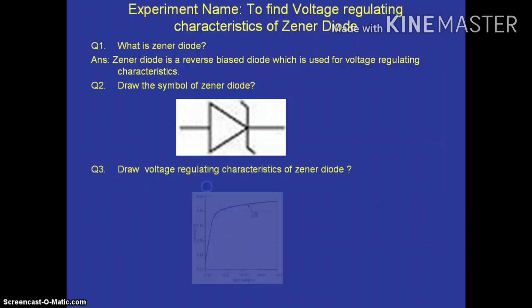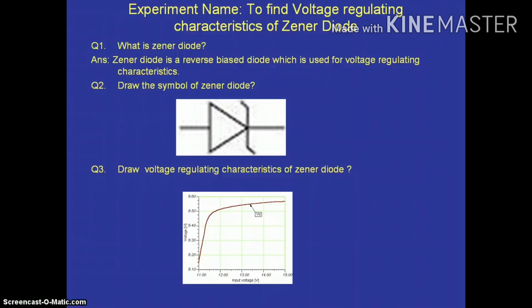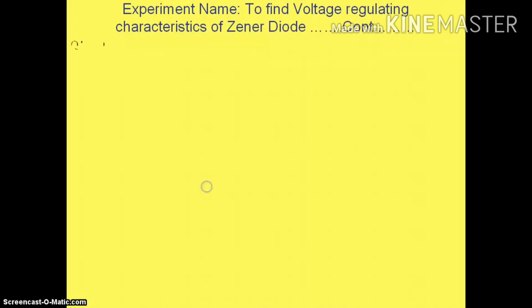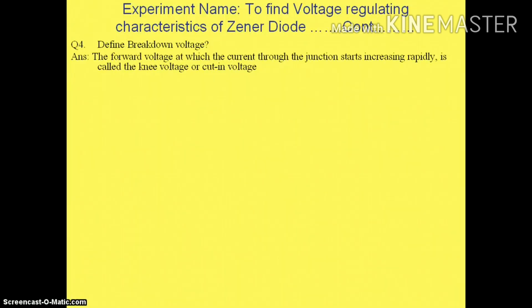Next question: draw the voltage regulating characteristics of the Zener diode. Along the x-axis is input voltage, along the y-axis is output voltage, and the graph shows a peak as shown in the diagram. Next, fourth question: define breakdown voltage. It is the voltage at which the current through the junction starts increasing rapidly, also called knee voltage or cutting voltage.